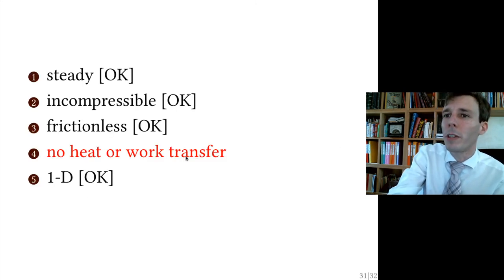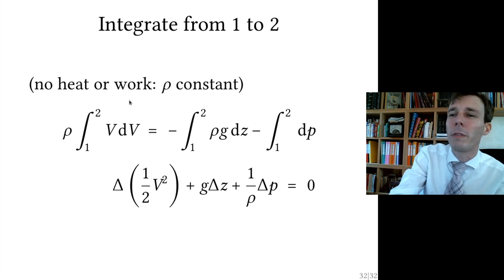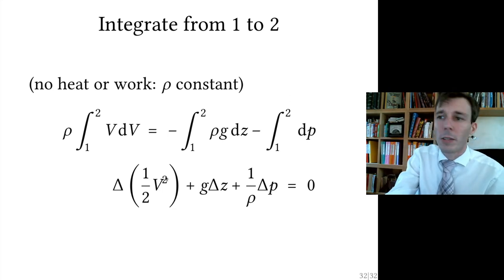Then we apply the fourth condition which is no heat and work transfer. And if you do that, then the density will become constant. You can integrate the previous term, which is rho. You can put the rho out of the integral and integrate vdv, then put the rho out of this and integrate gdz, and then integrate dp between one and two. And so you get in the end the delta of the square velocity plus the delta of z altitude multiplied by g, plus one over rho of the delta pressure. The sum of this is going to be zero.